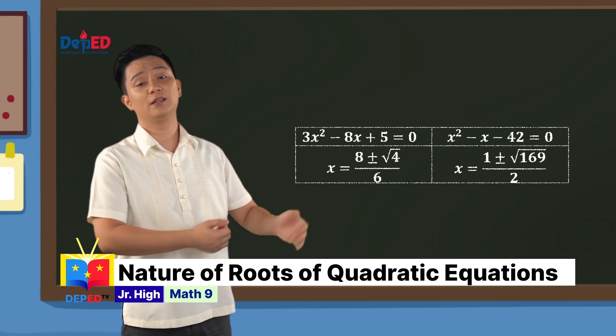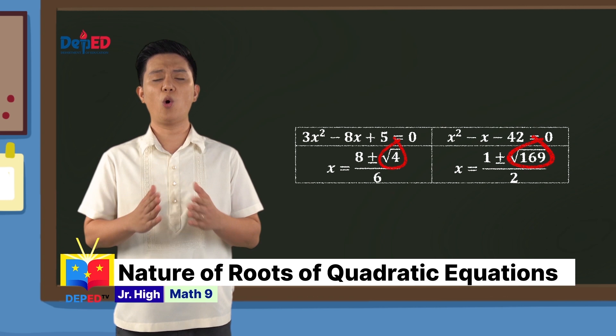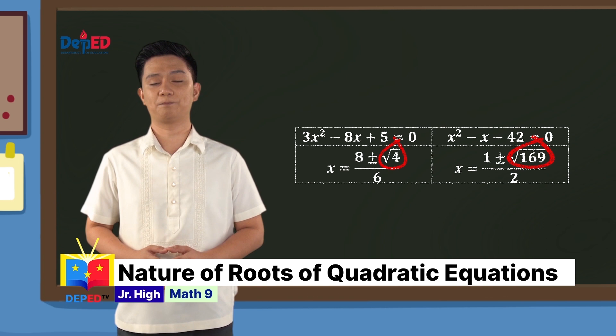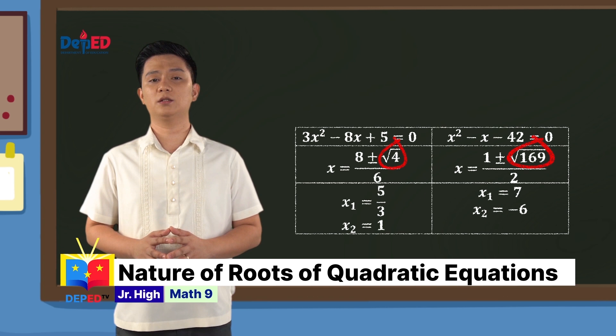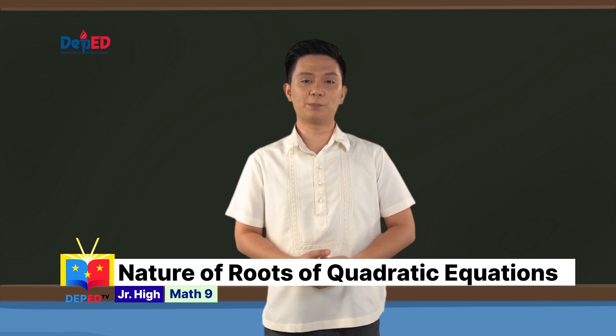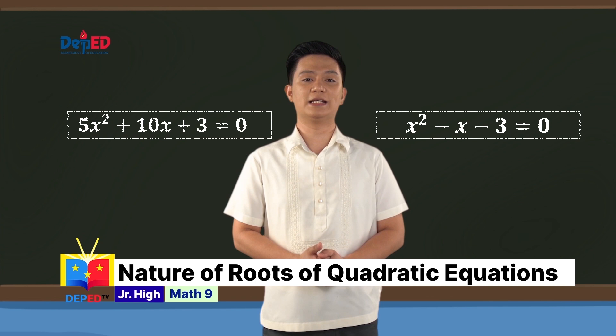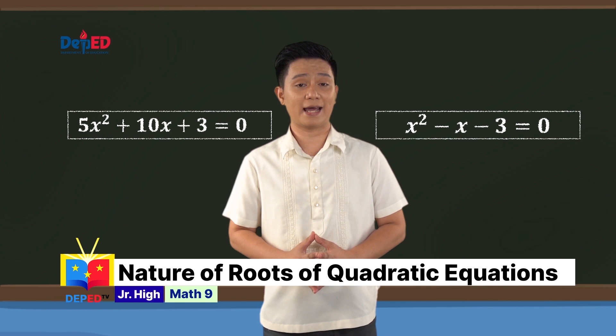Let's add this observation to our table of highlights: when the discriminant is positive and a perfect square, the roots are unequal and rational. We proceed to the third pair: 5x² + 10x + 3 = 0 and x² − x − 3 = 0. This pair shall introduce us to a different case of discriminant-root relationship.